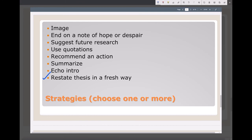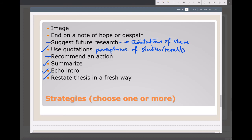She restated the thesis in a new way, echoed the introduction, and summarized different points. She did not recommend an action. She used paraphrases of studies and results as facts rather than direct quotations. She kind of suggested future research but talked about the limitations of the research. The donut paragraph used an image, but she did not use that strategy in the organic food paragraph. She also did not end with a note of hope or despair. So she used four strategies out of the eight we've seen here.